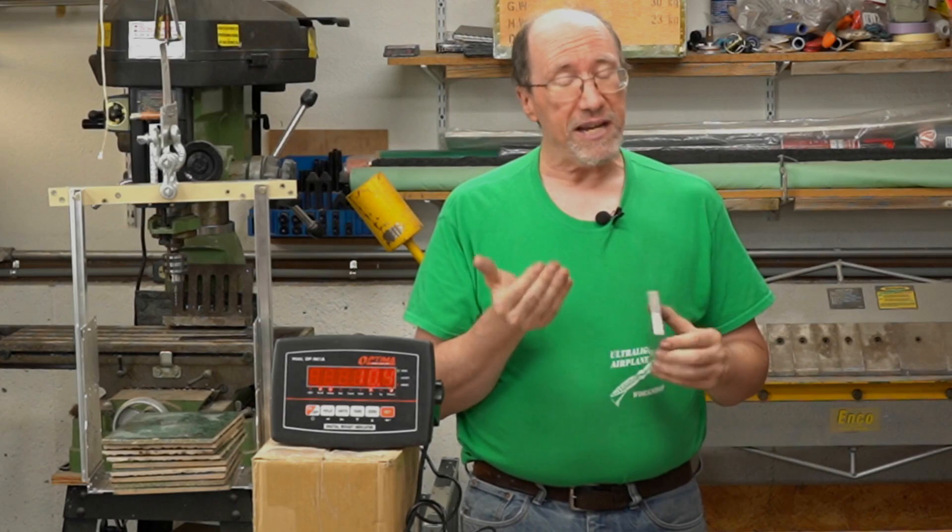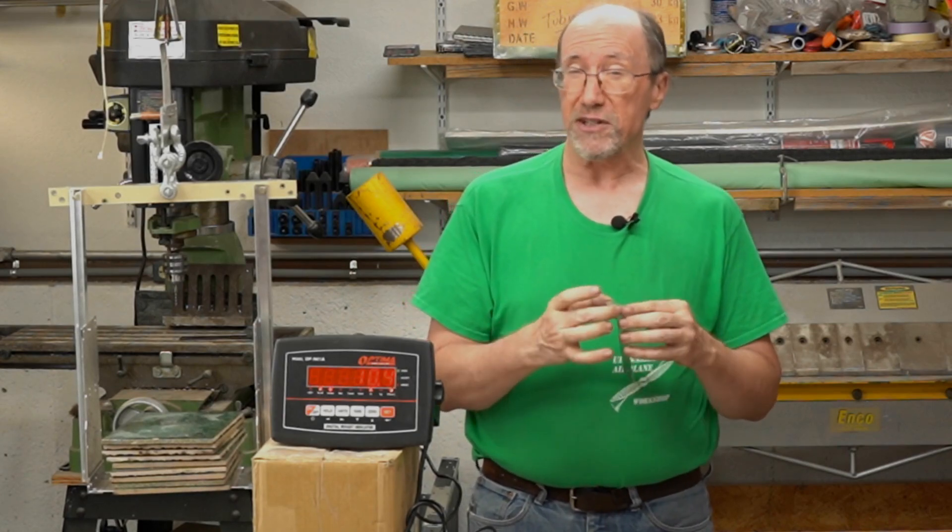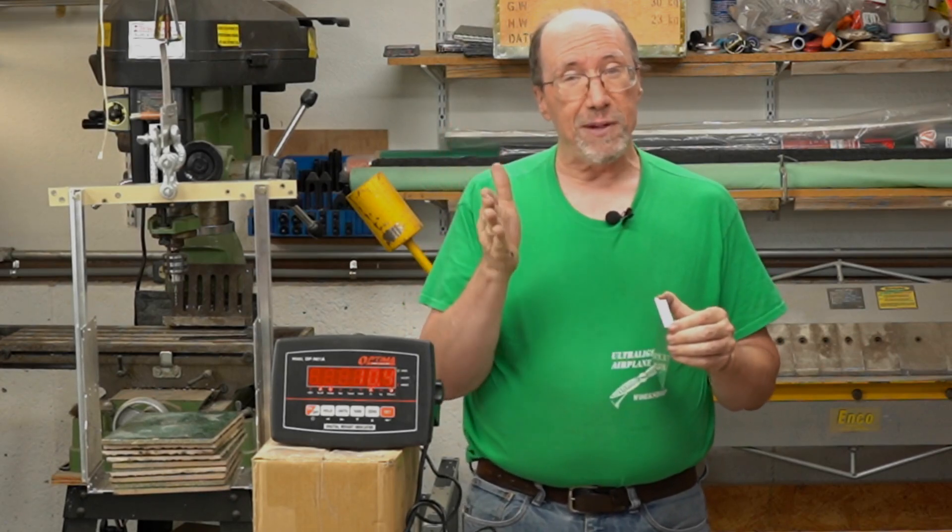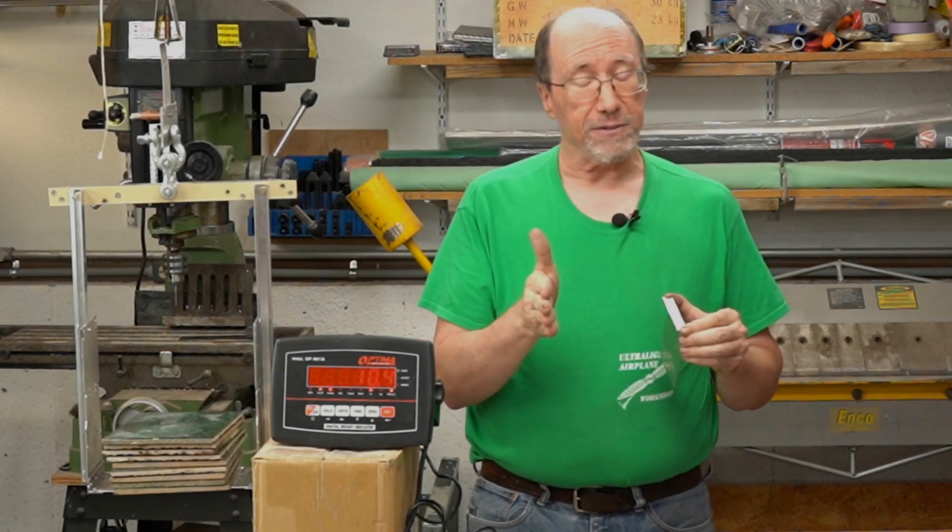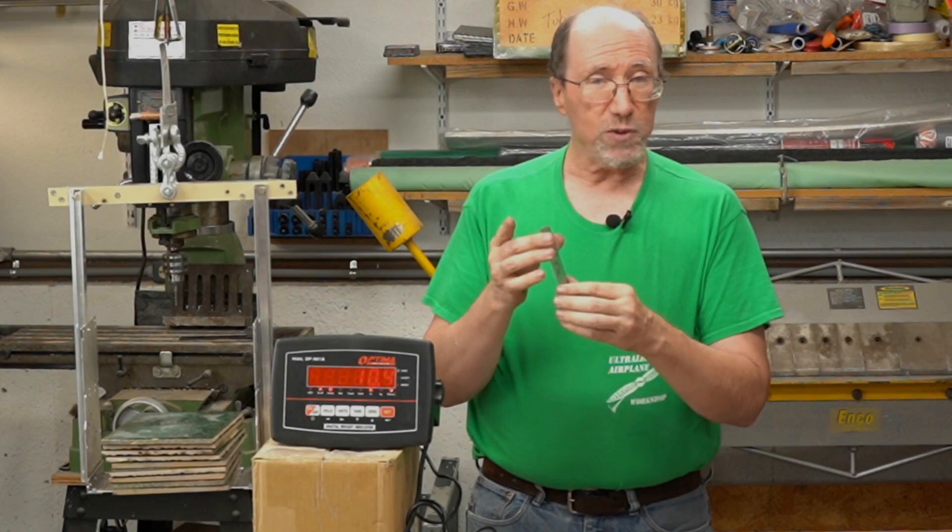So the next thing we can think about is what if we don't use three inch spacing? What if we use two inch spacing on our rivets? So that's going to change the load. That's going to reduce the load from a maximum of 30 down to 20 pounds. So then I got another piece. Now this happens to be two inches wide.